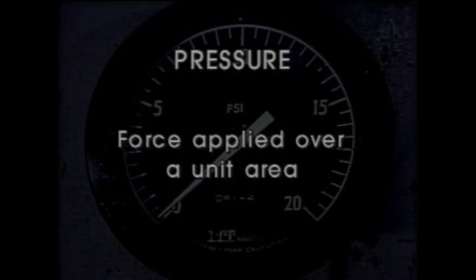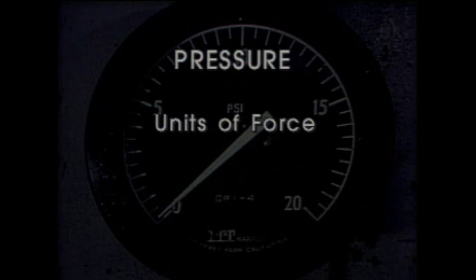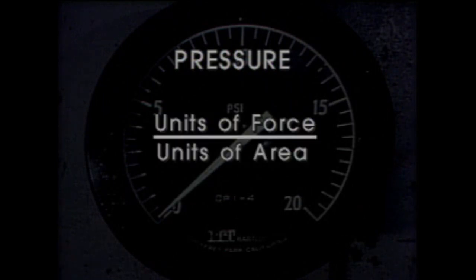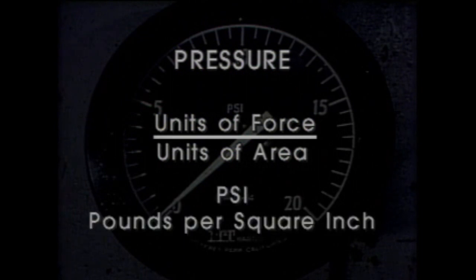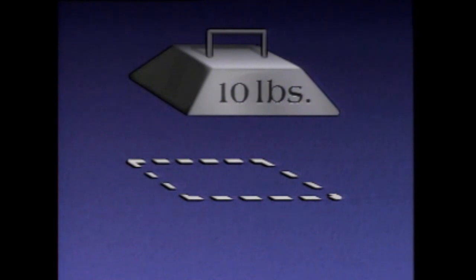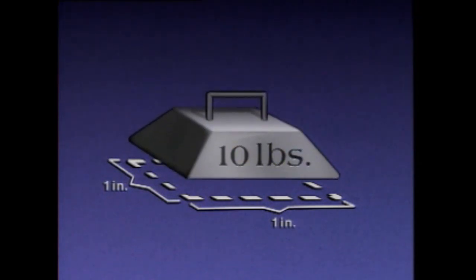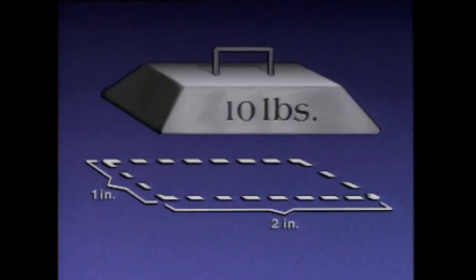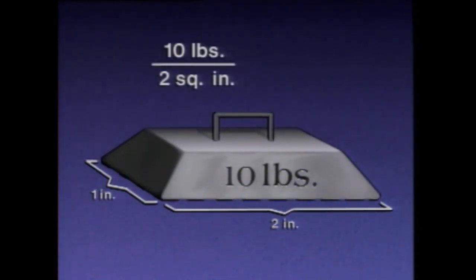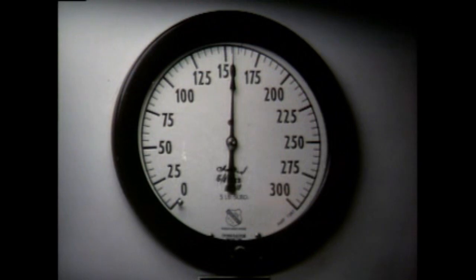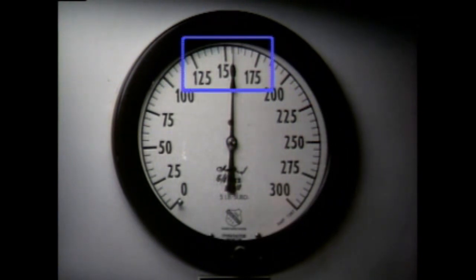Pressure is defined as force applied over a unit area. It's measured in units of force divided by units of area. Pressure is usually measured in psi — pounds per square inch. To illustrate this, let's say we have ten pounds of pressure applied over a one square inch area: we have ten pounds per square inch. Ten pounds of pressure divided by two square inches is five pounds per square inch. In a plant, pressure is often indicated on a gauge like this one. This gauge is indicating about 156 psi — in other words, the pressure at this point in the system is about 156 pounds per square inch.